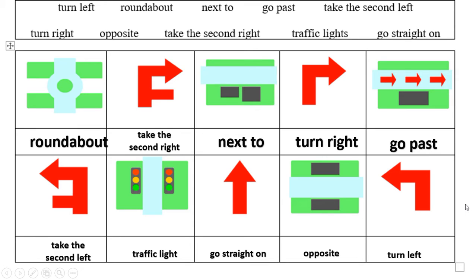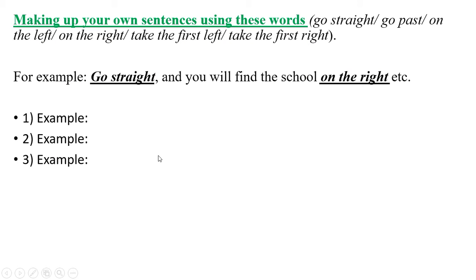Very good, students. Now let's go to the next task — making up your own sentences using these words: go straight, go past, on the left, on the right, take the first left, take the first right. You must tell three examples. I give you one minute to think. For example: 'Go straight and you will find the school on the right.' (Идите прямо и вы найдете школу с правой стороны.)